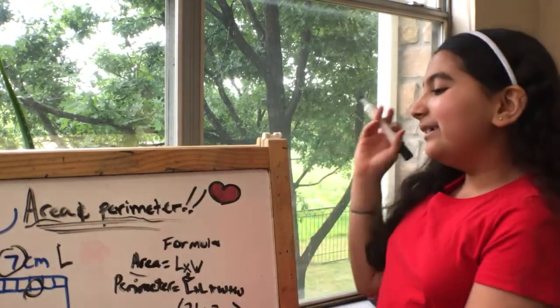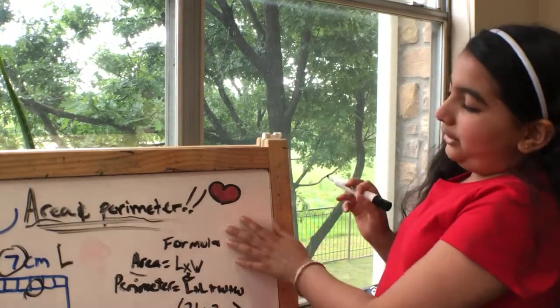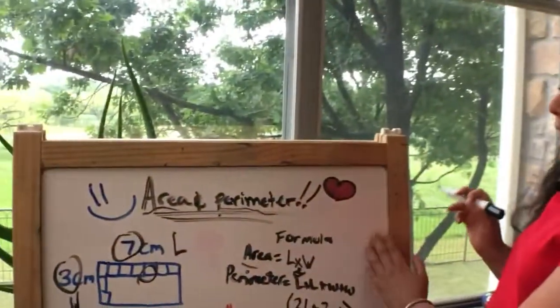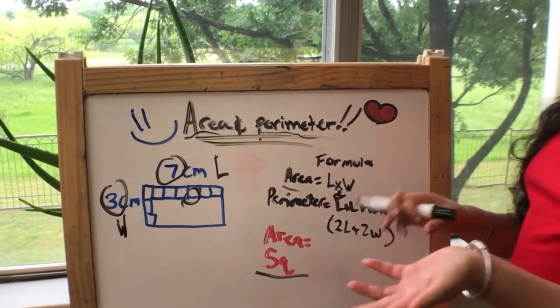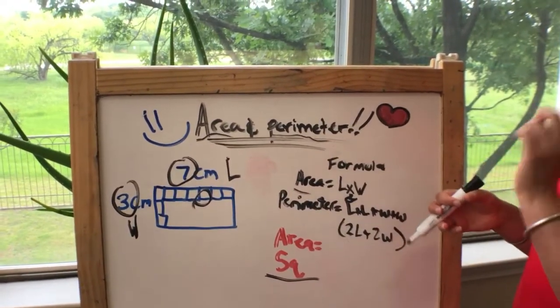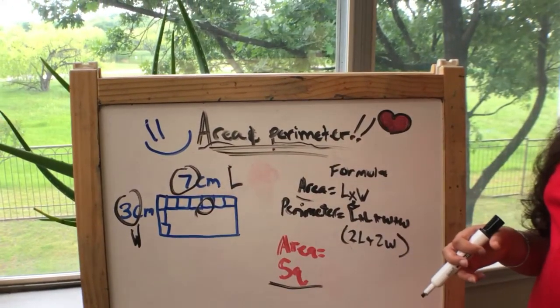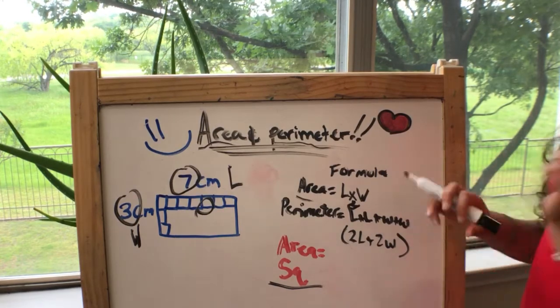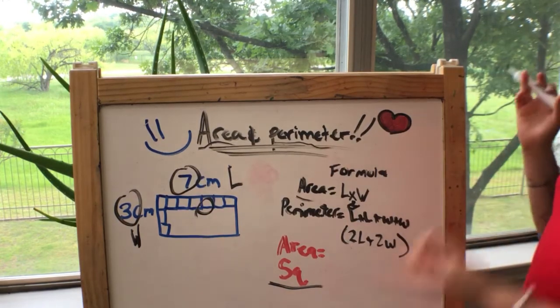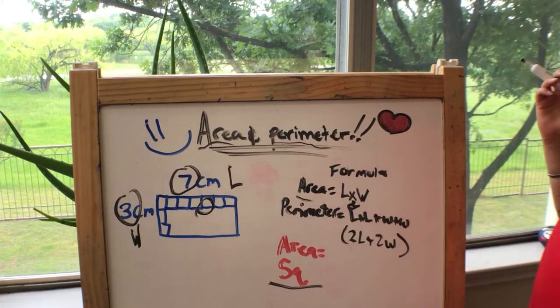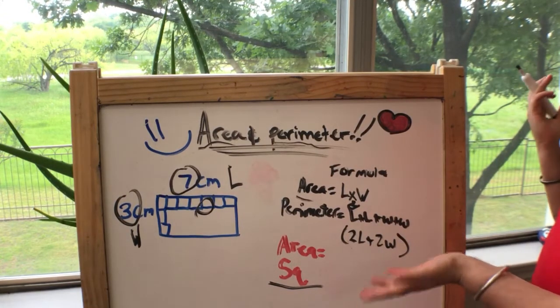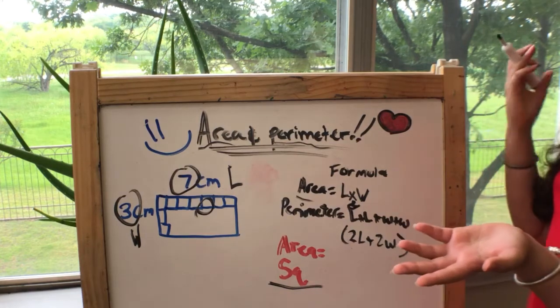So I wrote all the formulas here as you could see. The formula for area is L times W, which means length times width. Perimeter means length plus length plus width plus width, or if you want to make it simpler, you could do two L's, which means two lengths plus two widths.